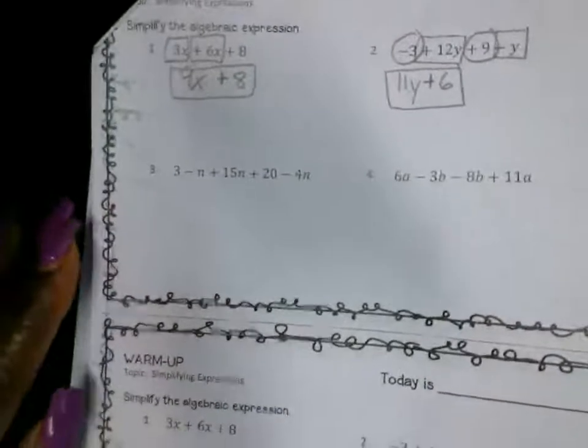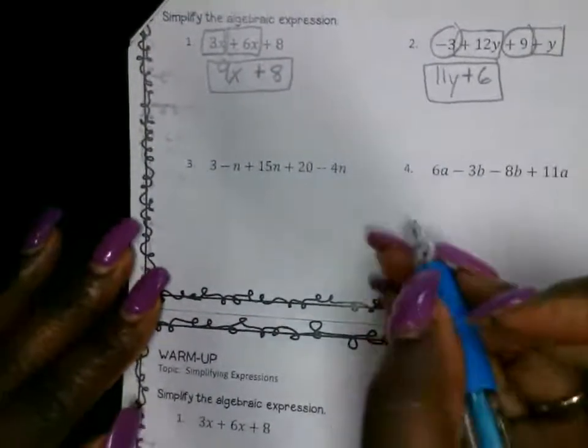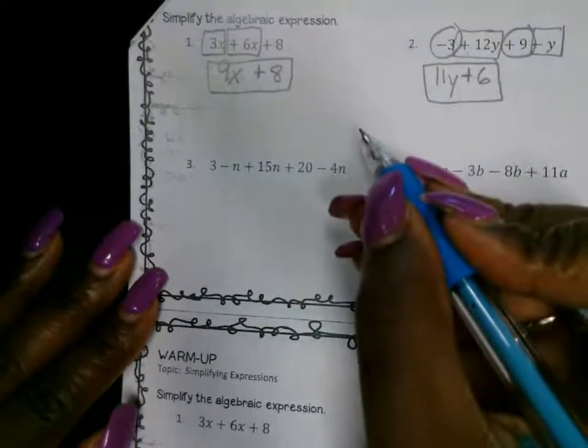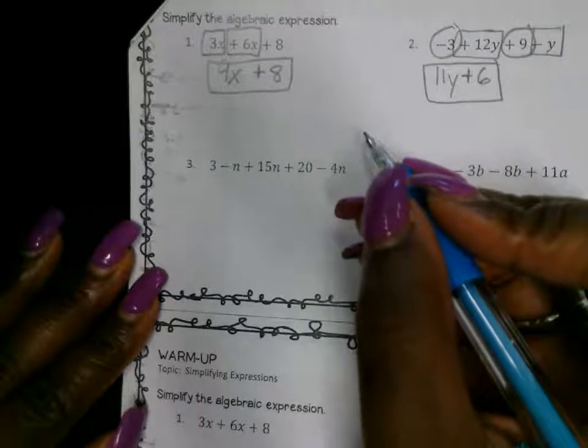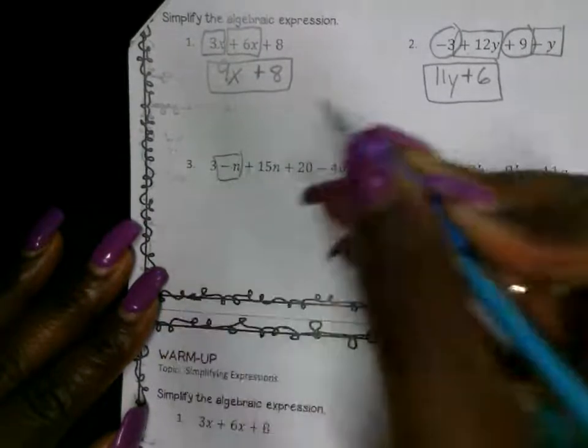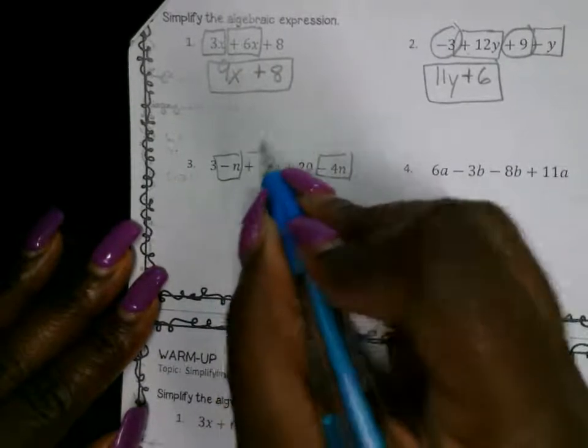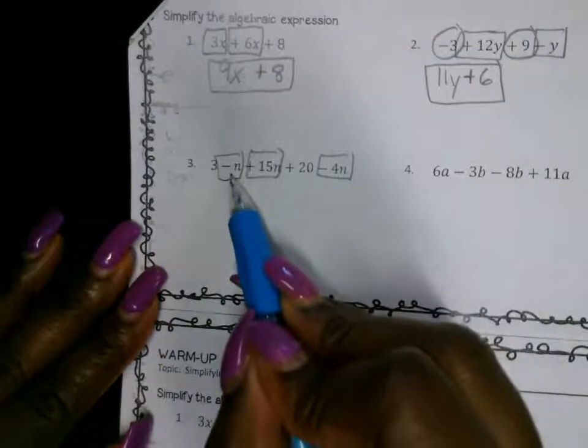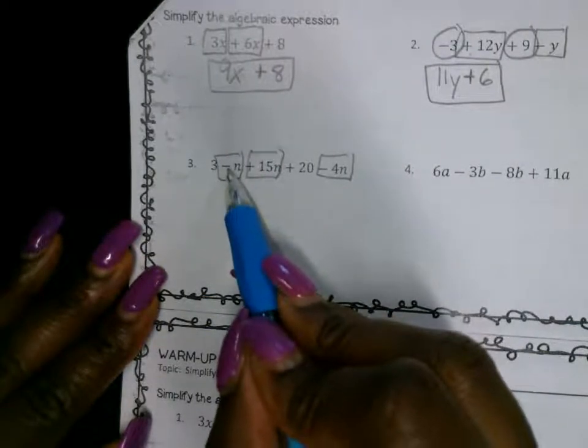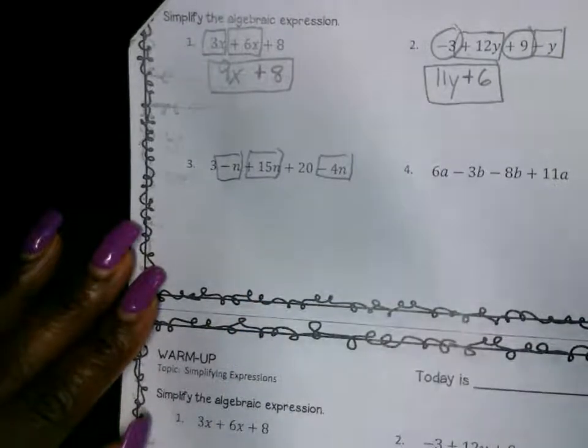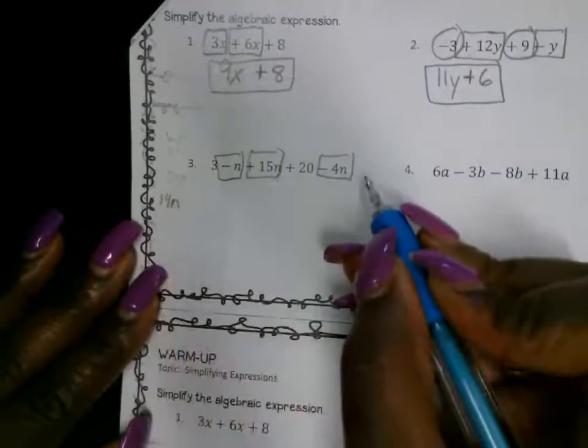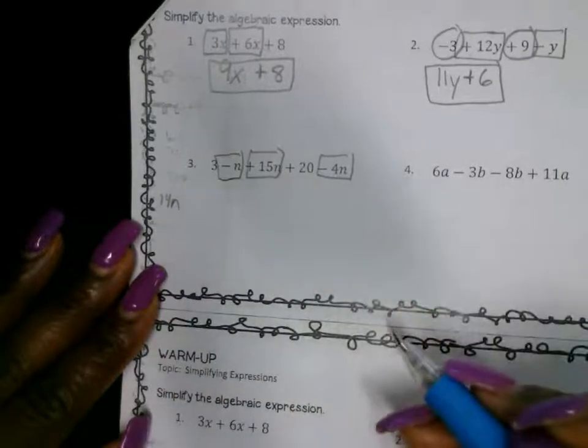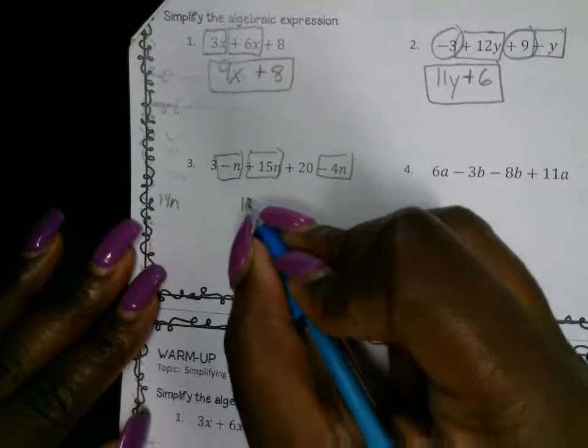Number 3. Let's combine like terms there. What terms can we combine here? Negative 1 in plus 15 in. And that's negative 4 in. What is negative 1 plus 15? That gives you 14 in, right? And then, positive. Then, 14 in minus 4 in, what does that give you? 10 in. Positive or negative? Positive. Very good.